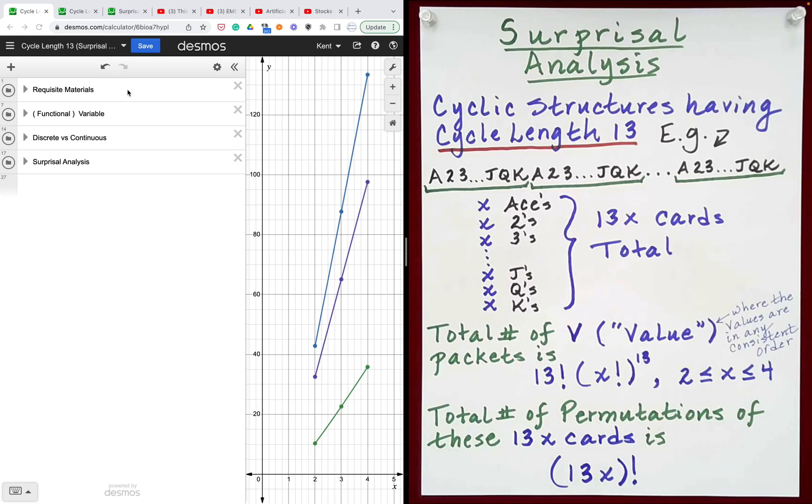This is the third video dedicated to the Gilbreth Principle and finding surprisal values for Gilbreth performances. Today we're looking at cyclic structures having cycle length 13.